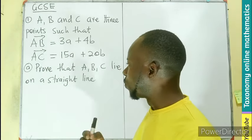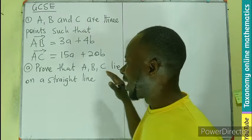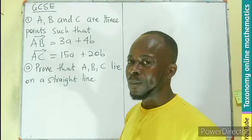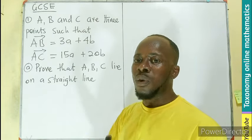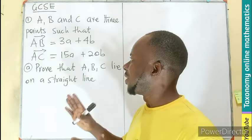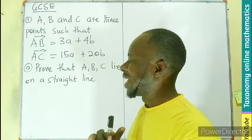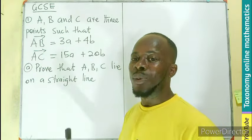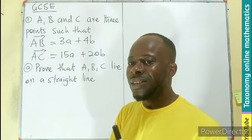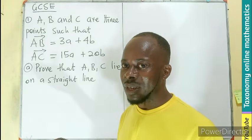We are to prove that the points A, B, and C lie on a straight line. Simply put, we are asked to prove whether they are collinear. For these three points to be collinear, it means we want to prove whether they are parallel. When they are parallel, then we can say that they are in the same plane or the same straight line.